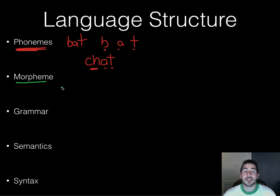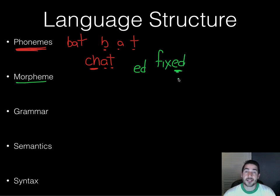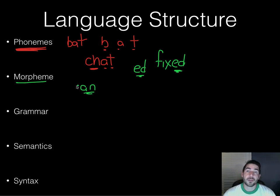A morpheme is the smallest unit of sound that has some sort of meaning. For example, 'ed' by itself doesn't mean anything, but if we have the word 'fix' and add 'ed' at the end, it means something happened in the past. Similarly, a prefix like 'un' at the beginning of something means 'not.' So a morpheme is the smallest unit of sound that carries meaning.